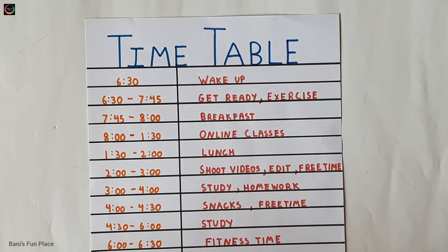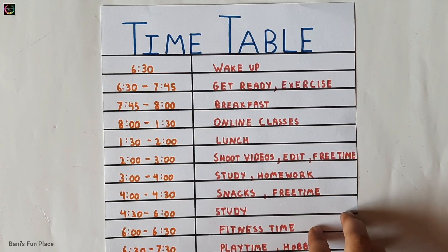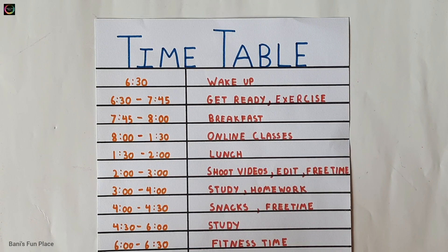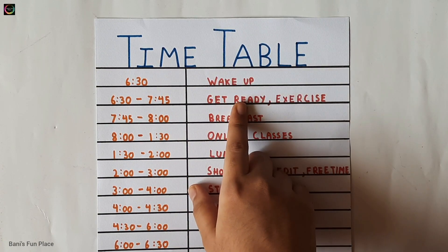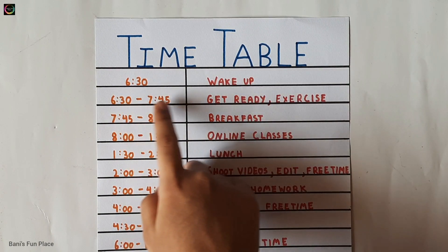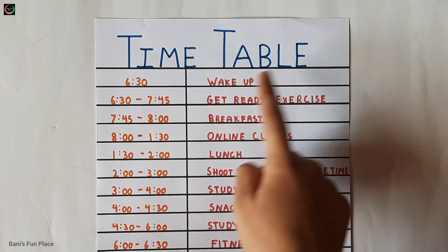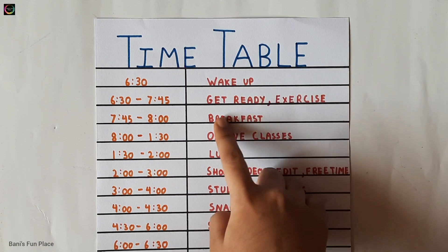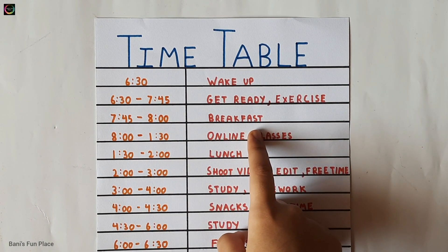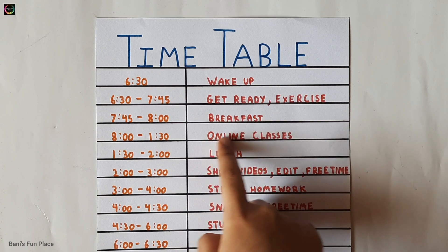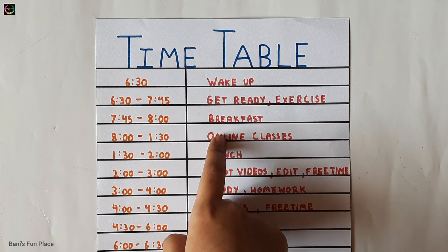Here I've written the things I do in one whole day and here are the timings. I wake up at 6:30 in the morning and then I get ready from 6:30 to 7:45. First I exercise a little bit and then I get ready. Then it's my breakfast time for the next 15 minutes.